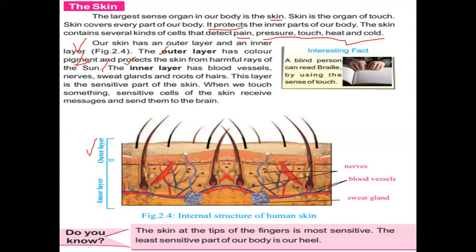The inner layer of skin has blood vessels, nerves, sweat glands, and roots of hair. The blue structures are veins and red are arteries. The sweat glands release waste from the body and also cool our body in summer. When our body perspires a lot, it releases harmful substances from the body as well.